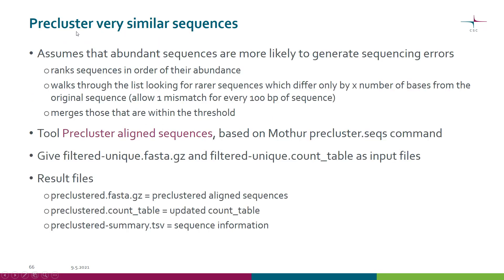The aim of pre-clustering is to remove sequencing errors. We make the assumption that abundant sequences are more likely to generate sequencing errors. So we rank the sequences in order of their abundance, and then we walk through the list looking for rare sequences which differ only by a certain number of bases from the original one.